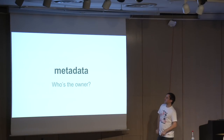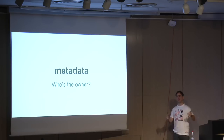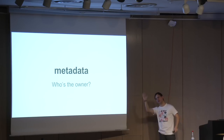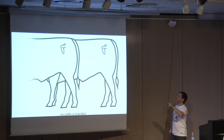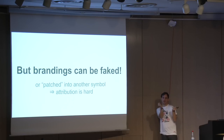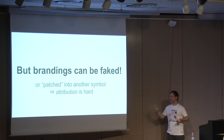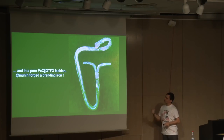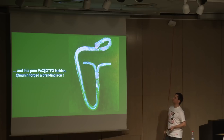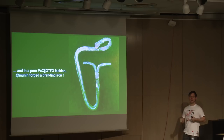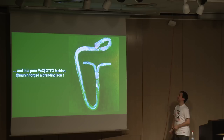A little parenthesis on metadata: people like to attribute — 'oh, there's a Chinese string here, it must be China or North Korea.' Cows and metadata: because you can't easily see the head initially, you brand the cattle, but those branding irons can be faked or patched into another symbol. The conclusion is that attribution is hard. We did a proof of concept of a real branding iron — I asked Moonin to actually forge a branding iron just for the sake of the presentation. That's me — I'm a normal guy.